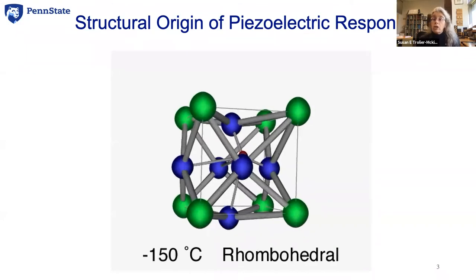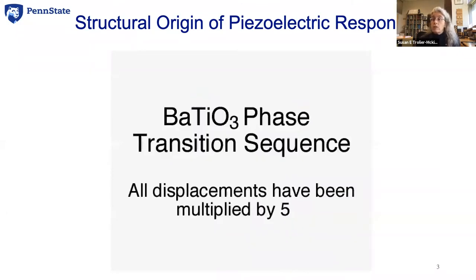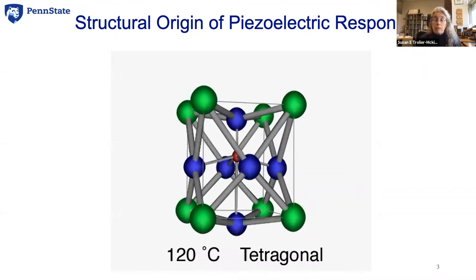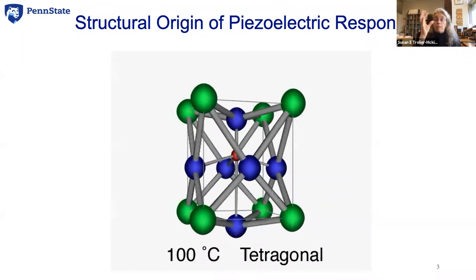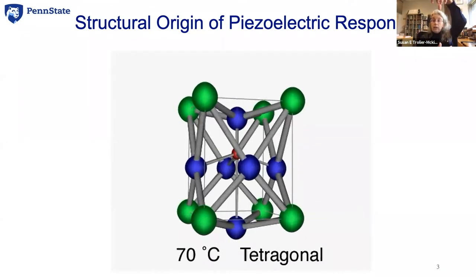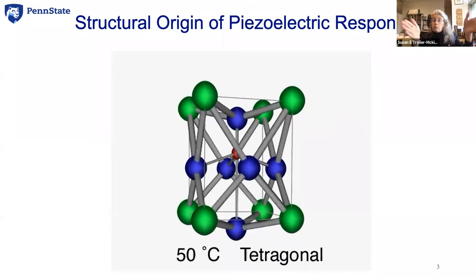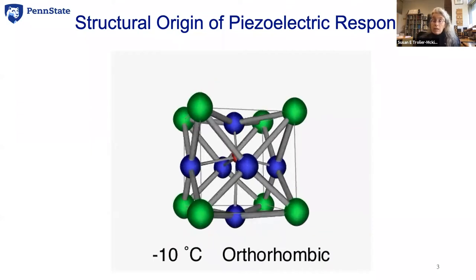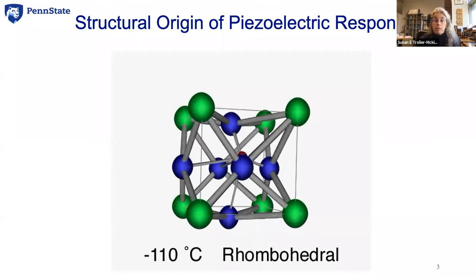As we change temperature in this material, the whole shape of the unit cell distorts as the atom that should have been at the very center displaces from the center of the unit cell. You can see that displacement — the red atom moved up. The whole unit cell got long parallel to the titanium displacement and it shrank laterally. There will ultimately be a coupling between this atom displacement, related to a spontaneous polarization, and the shape of the material.